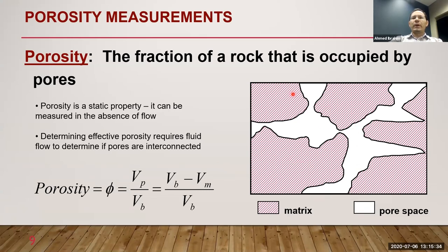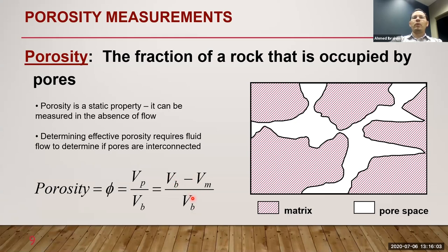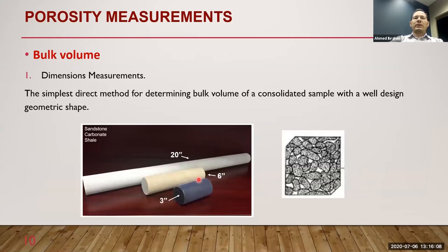We have the bulk volume, the matrix volume (the red portion), and the pore volume (the white portion). Porosity equals pore volume divided by bulk volume, which equals bulk volume minus matrix volume divided by bulk volume. To calculate porosity, we need to measure two of these three volumes.